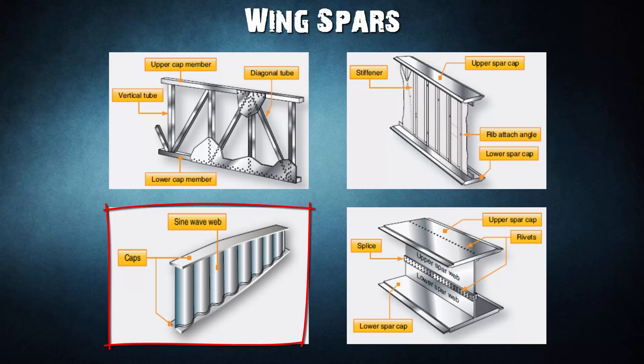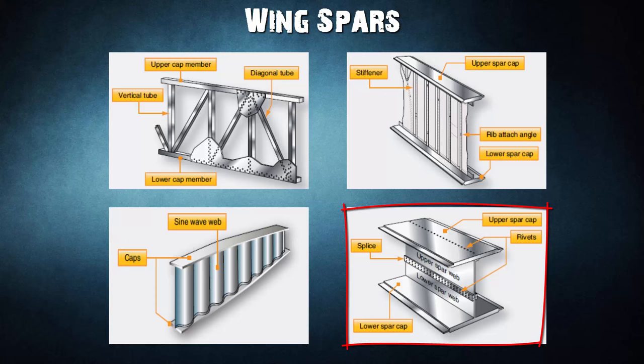Some metal and composite wing spars retain the I-beam concept but use a sine wave web. Additionally, fail-safe spar web design exists. Fail-safe means that should one member of a complex structure fail, some other part of the structure assumes the load of the failed member and permits continued operation. A fail-safe spar is made in two sections: the top section consists of a cap riveted to the upper web plate, and the lower section is a single extrusion of the lower cap and web plate, spliced together. If either section breaks, the other can still carry the load.